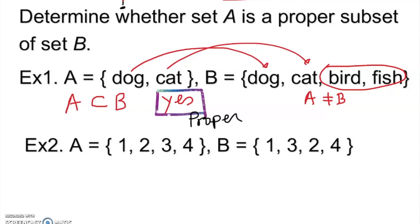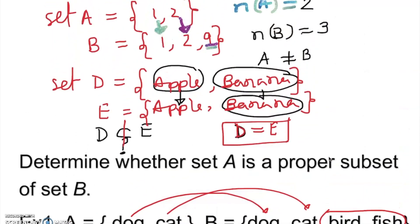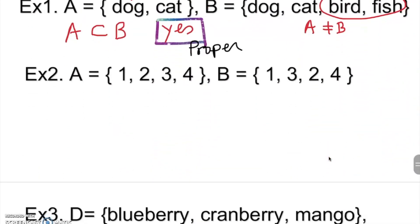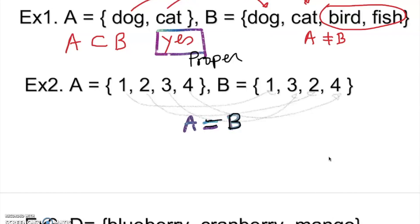Looking at the next example: element 1 is there, 2 is there, 3 is there, 4 is there — it seems like all elements of set A are in set B. But there is another condition we have to fulfill: they must not be equal. Now you can see that set A is equal to set B. By the definition, if A is equal to B, we say A is not a proper subset of B. So this is not a proper subset of B.